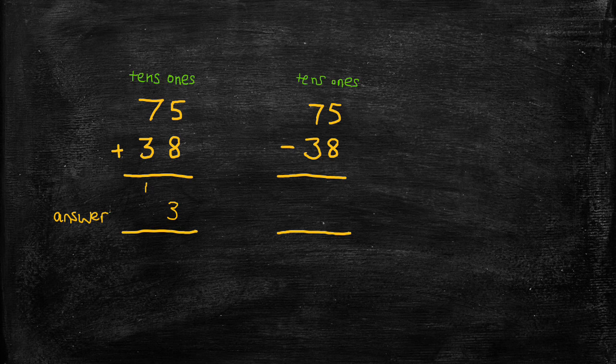Next, we move to the tens. We have 7 tens and 3 tens plus the 1 ten that we just carried, and so that's going to be 11 tens, or 110. And again there's more than 9 there, so I need to regroup into 1 hundred and 1 ten.